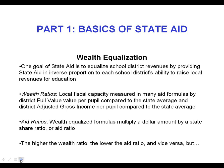Once we have determined the wealth ratio — whether it is full value per ARWADA or a combined wealth ratio — then we turn around and ask, what is the aid ratio? Typically these wealth-equalized formulas multiply a dollar amount, whether it is an approved expense, by a state share ratio or aid ratio. So often on your output reports you will see an aid ratio — something like one minus the combined wealth ratio — and what is remaining is the state share. A generic example: if your wealth ratio is 90% of the state average, your aid ratio could be one minus 90%, or 10%. The higher the wealth ratio, the lower the aid ratio, and vice versa.